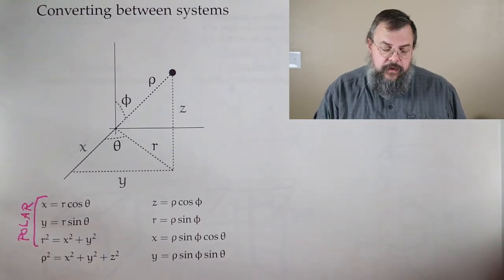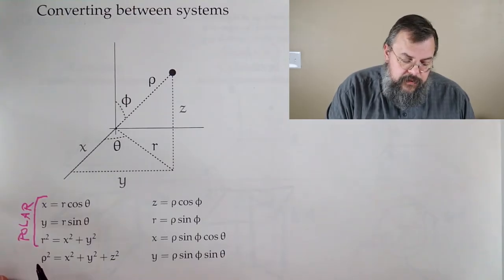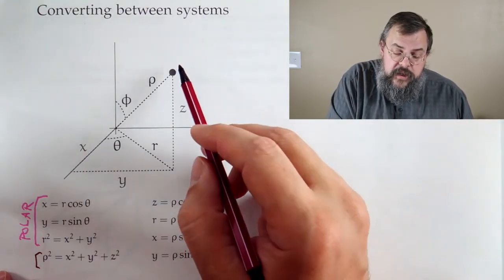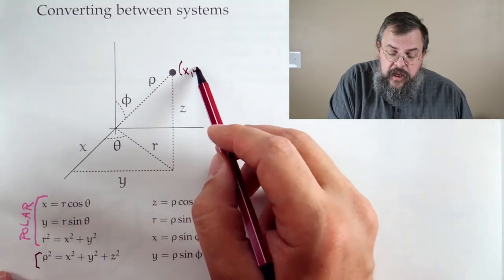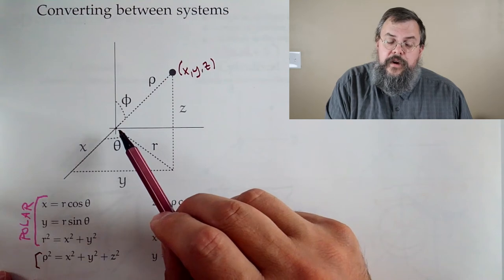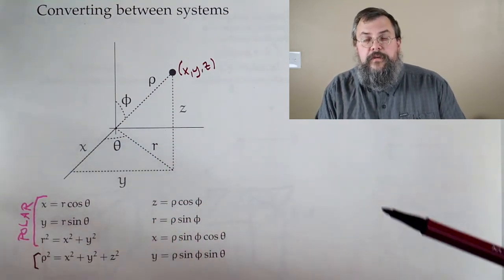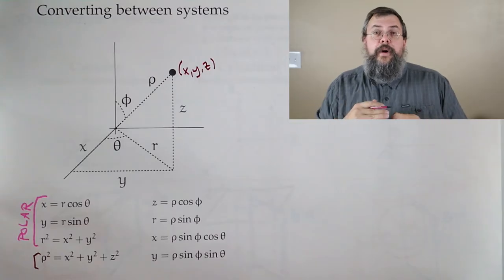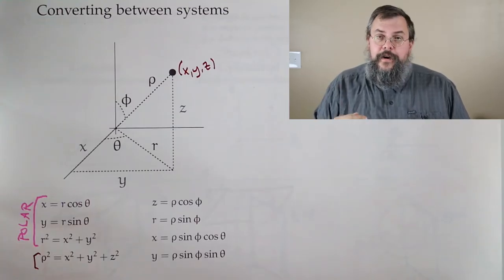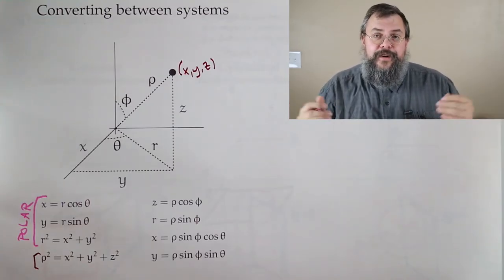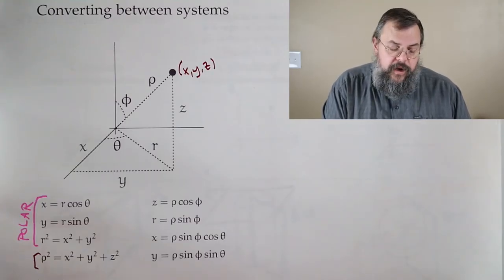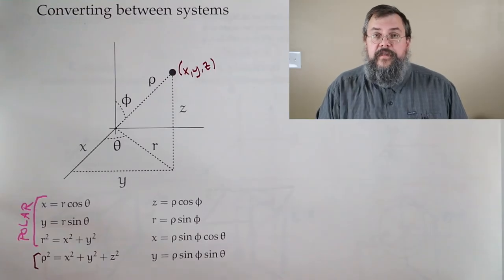The next rule is rho squared equals x squared plus y squared plus z squared. Where does that come from? A point in Cartesian is (x, y, z). How far is it from the origin? The distance formula gives the square root of x squared plus y squared plus z squared. But rho is also telling us how far we are from the origin. Therefore rho equals that square root, or more elegantly, rho squared equals x squared plus y squared plus z squared.